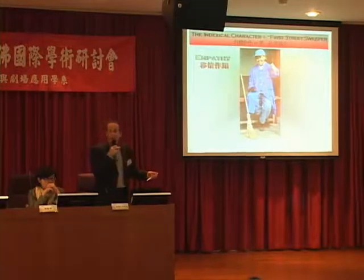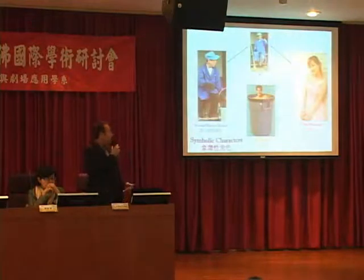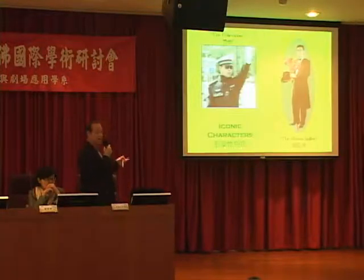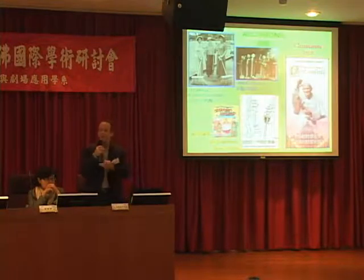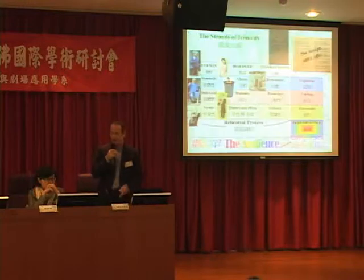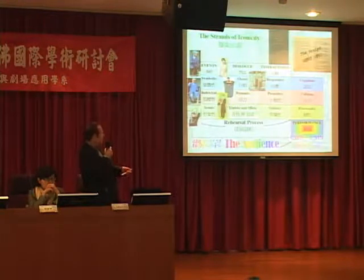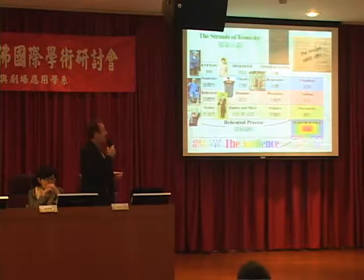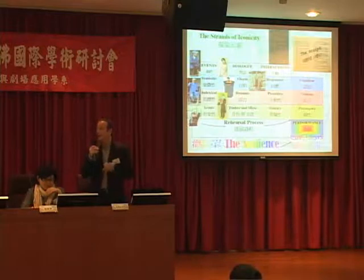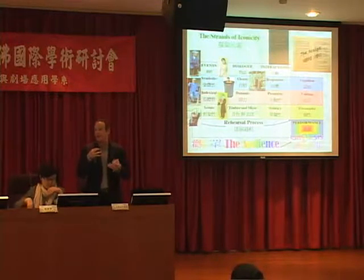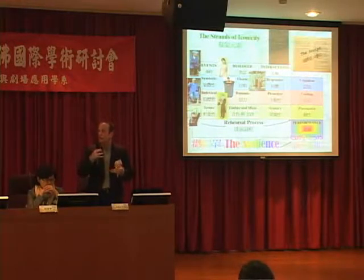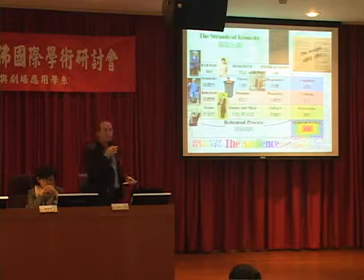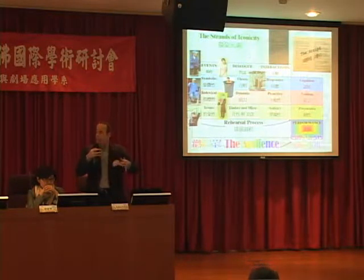I've been able to show you who the indexical character is and the important parts of empathy, describe symbolic characters and how they work in the play, show you iconic characters, and the importance of allusions. You can see them all mapped out together in the strands of iconicity. For those of you who are interested, you can get my book, 'Reinventing Drama,' which is a complete statement of the whole process in detail.